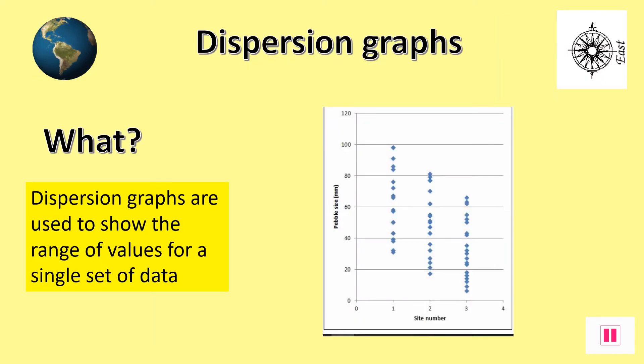Here we can see a typical dispersion graph showing pebbles. They are used to show the frequency or range of values for a single set of data. Each dot on the graph represents one piece of information. The more dots there are in a particular category, the more frequently that event has happened. Pause the show making sure you understand what dispersion graphs are.